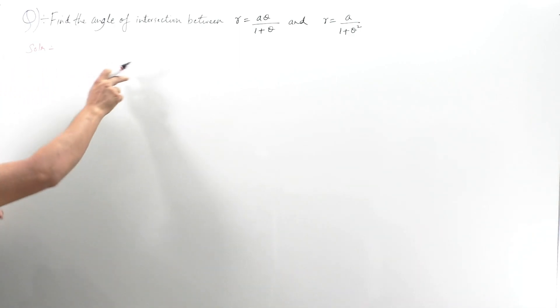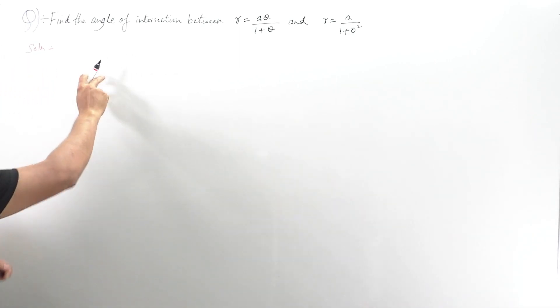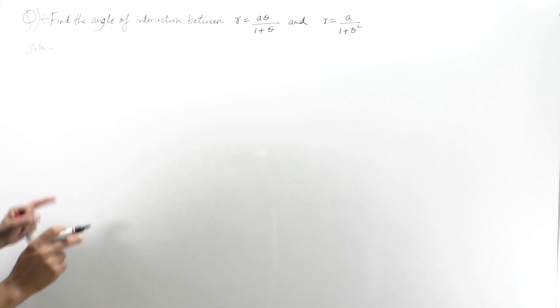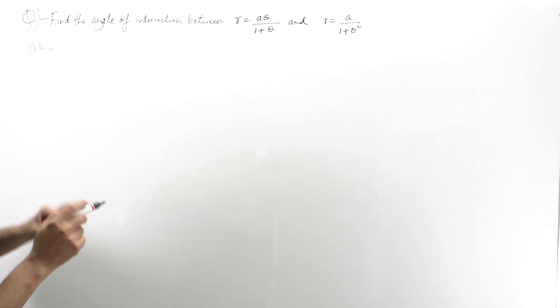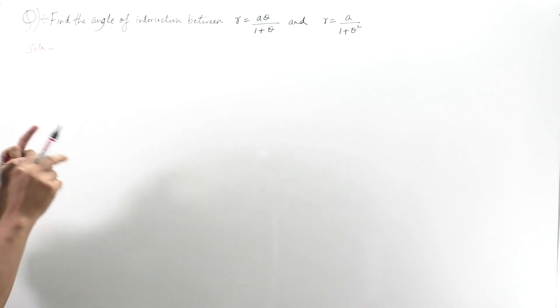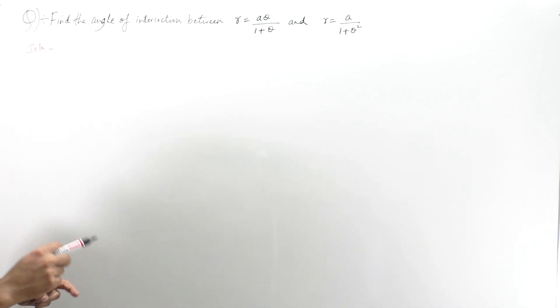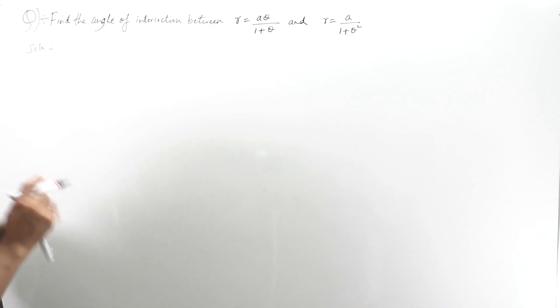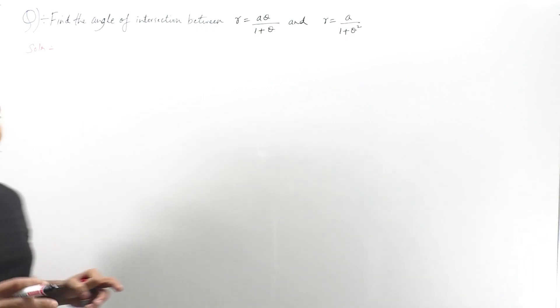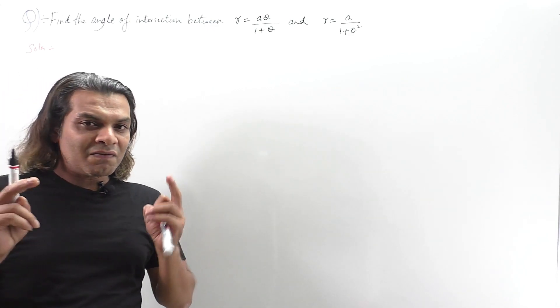Moving on to the problem. In solving the angle of intersection, we find φ₁ for the first curve and φ₂ for the second curve. The angle of intersection is nothing but φ₁ minus φ₂.